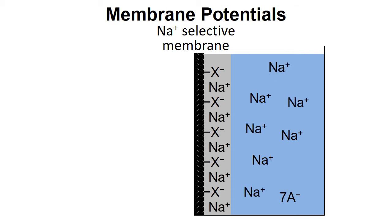Now let's consider the situation where the effective concentration of sodium ions in the solution is higher than that in the membrane. At equilibrium we get a slight positive charge in the membrane and a slightly negative charge in the solution. Again, this separation of charge between the solution and the membrane results in a potential difference between the two phases.